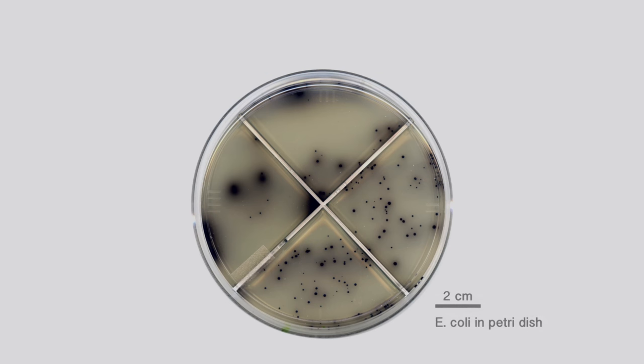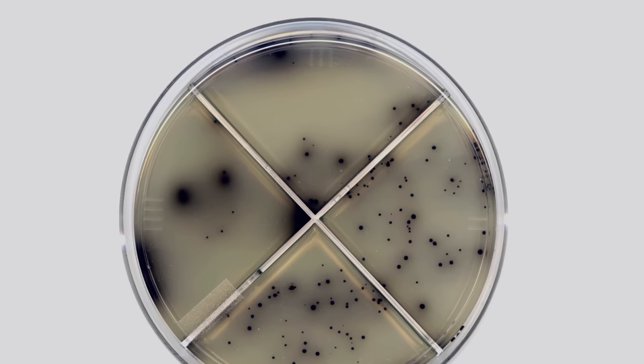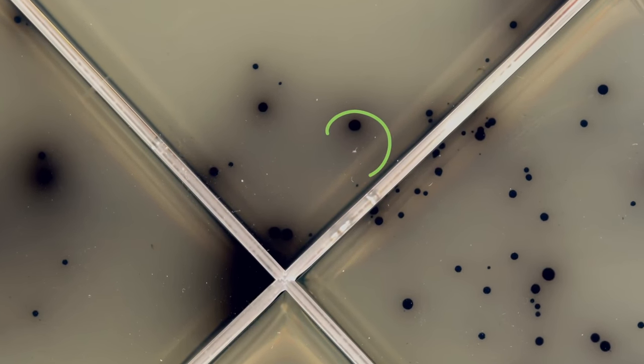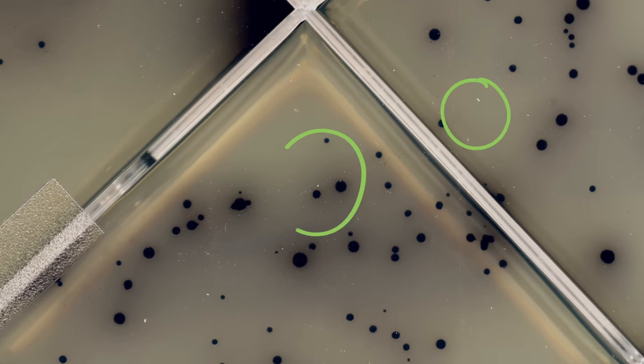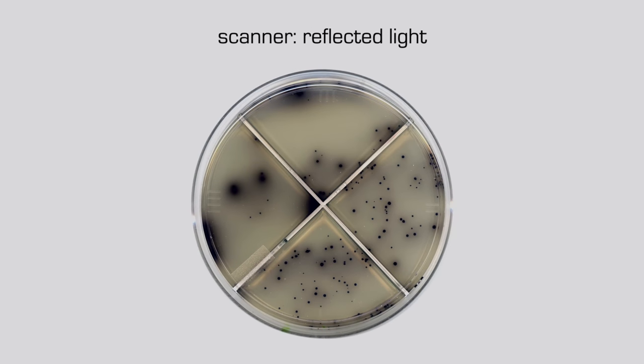I put the petri dish on the scanner and once again use the default reflected light, captured at a pretty high resolution, around 400 megs for the whole image. Looks good, but as we zoom in, we're getting some dust and dirt on the surface of the petri dish. I'm not happy about that.